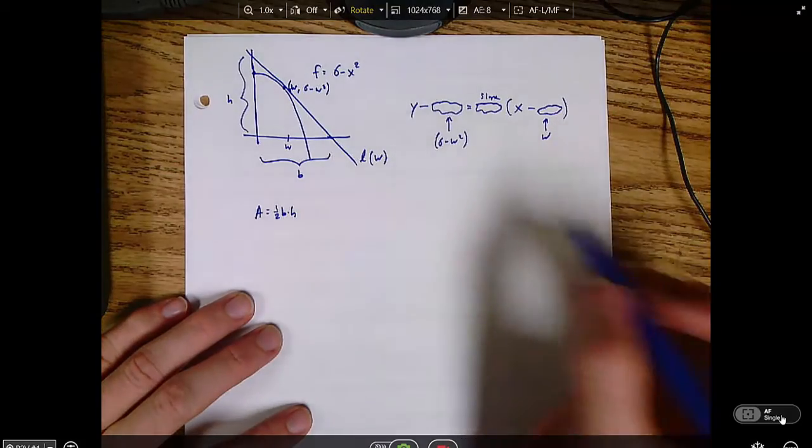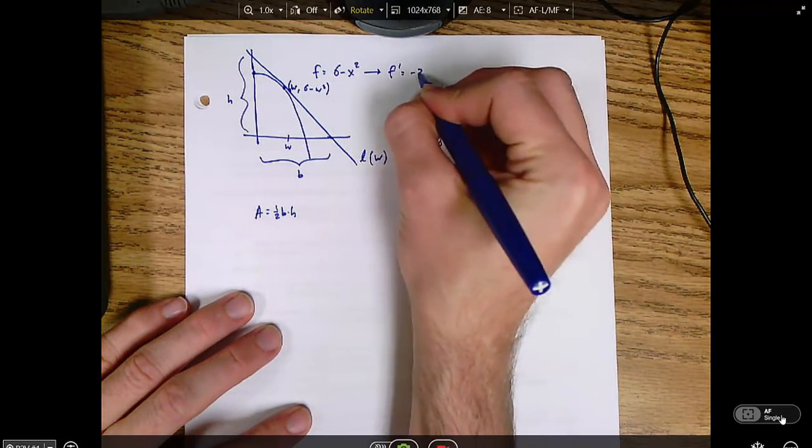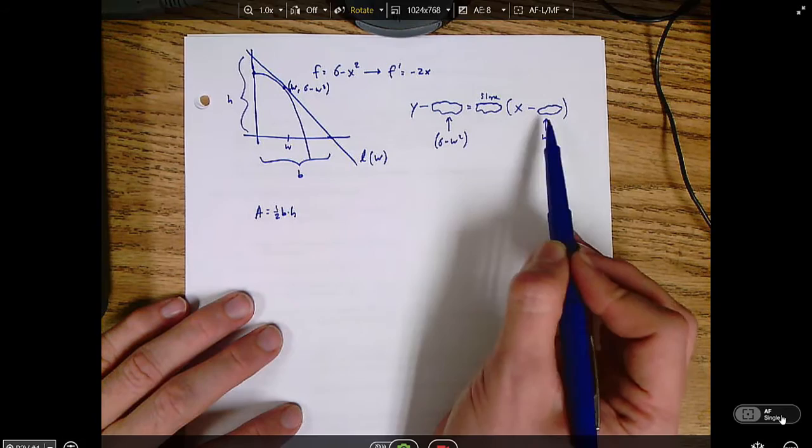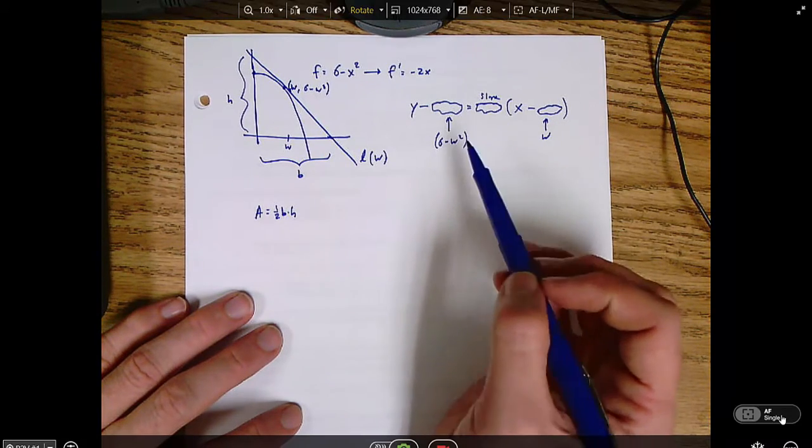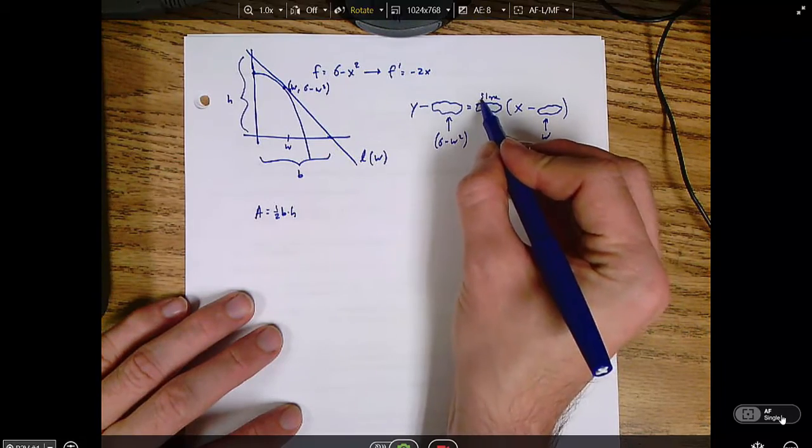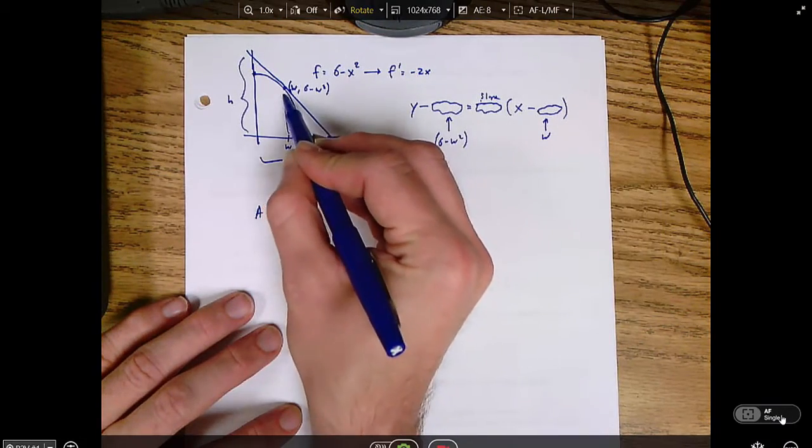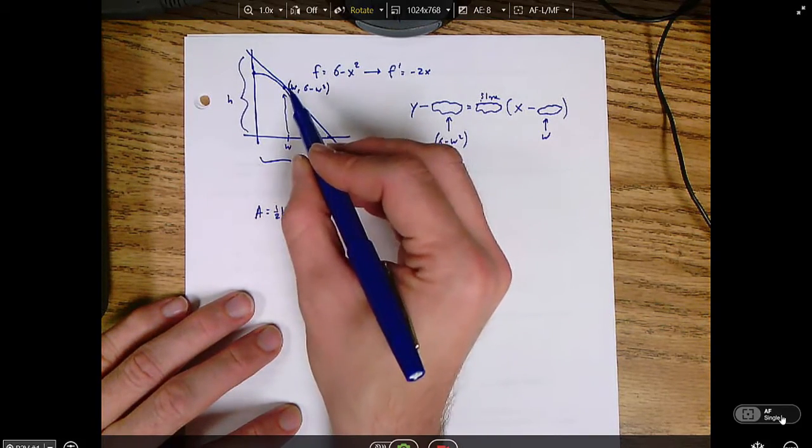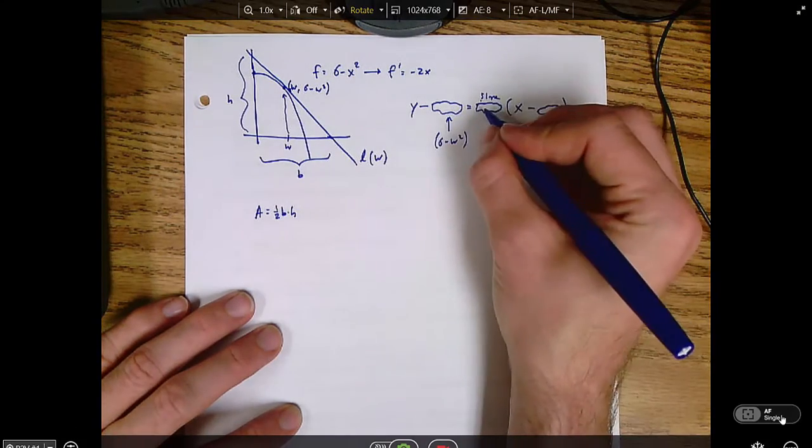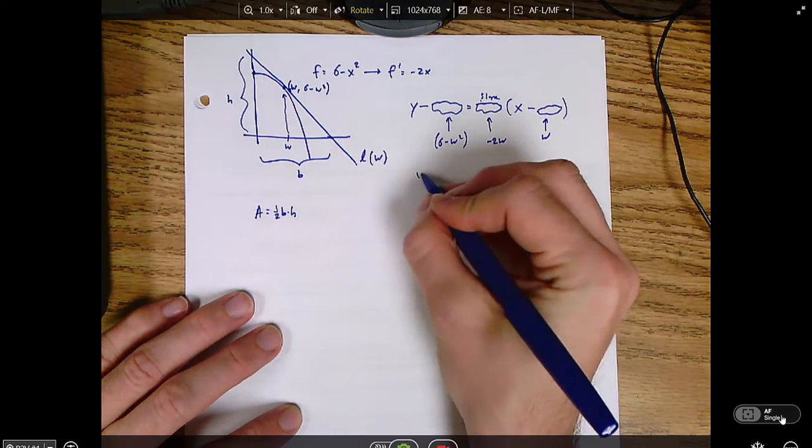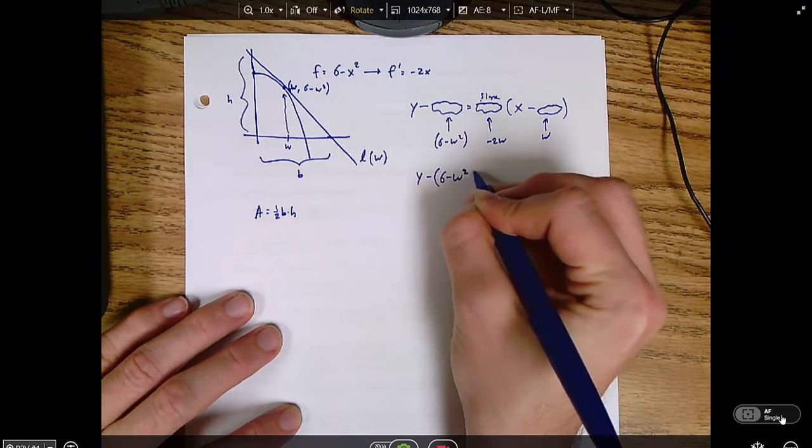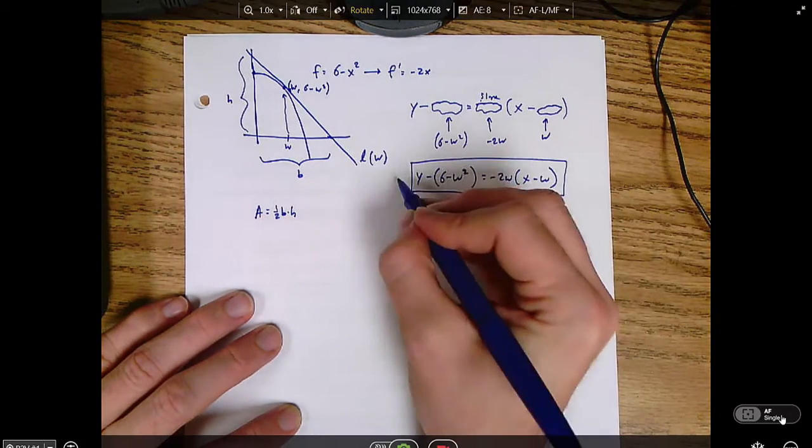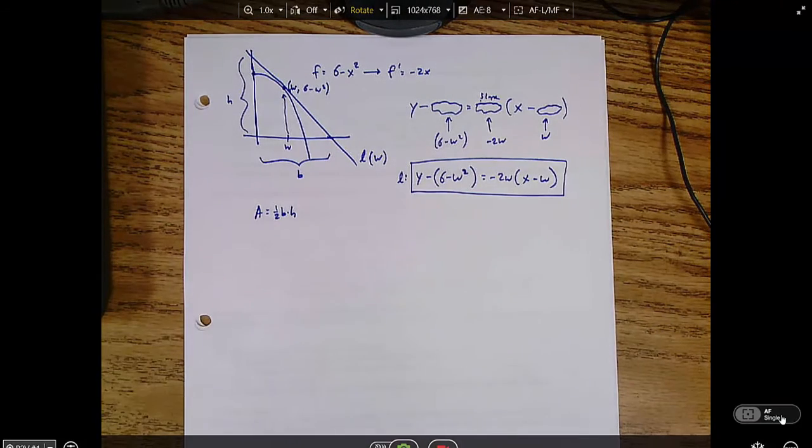We know our y coordinate and our x coordinate already. Our x coordinate is w, our y coordinate is 6 minus w squared. The slope we can find by taking the derivative, so f prime is negative 2x. But it would be a mistake to plug in negative 2x here, because then we'd have an x squared overall on this right-hand side, and it wouldn't be a line anymore. We want to evaluate the derivative when x equals w, so the slope is then going to be negative 2w. So that's our equation for l.